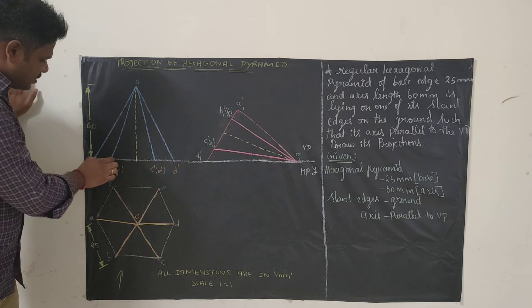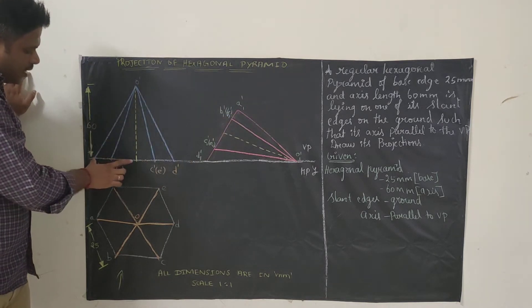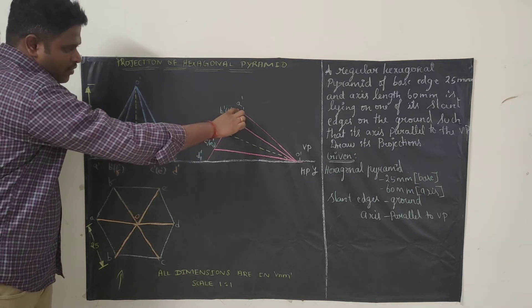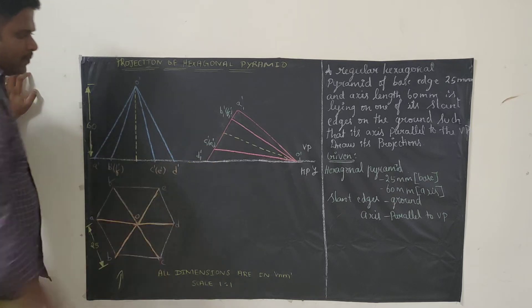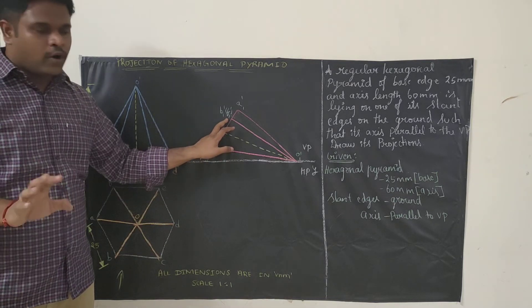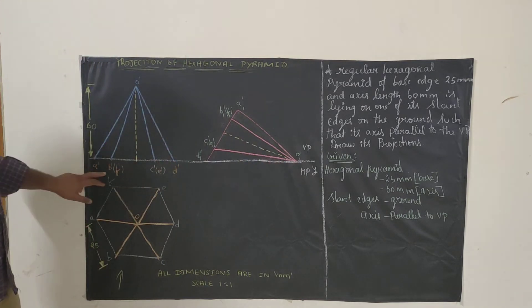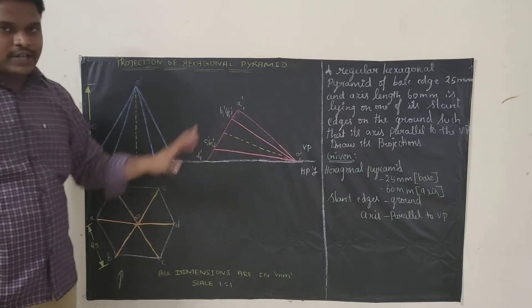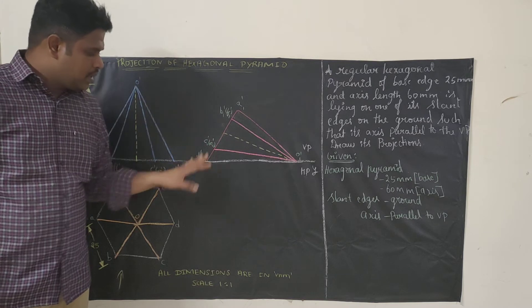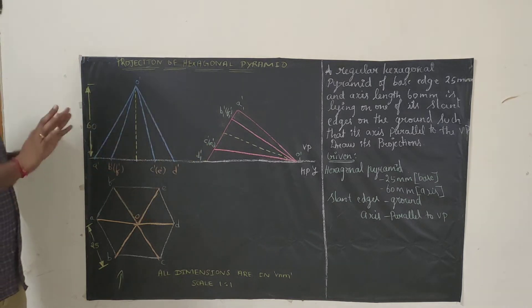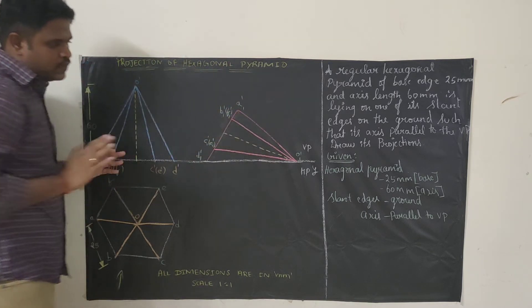Next, measure the distance from A dash to B dash — that same distance applies here. The distance from A dash to the axis is the same from A1 dash to the axis. Measure D dash to C dash — the same distance applies on the other side. You now have three reference points. Connect all points to O1 dash and name them: B dash becomes B1 dash, F dash becomes F1 dash, C becomes C1 dash, E becomes E1 dash. What we have done is taken the original triangle and tilted it so the slant edge rests on the reference line.